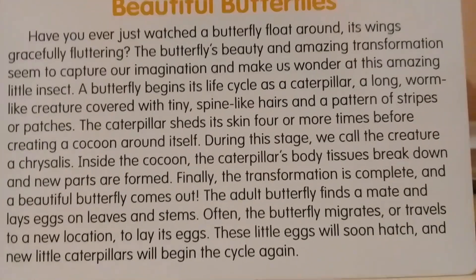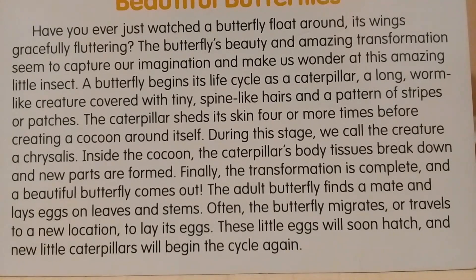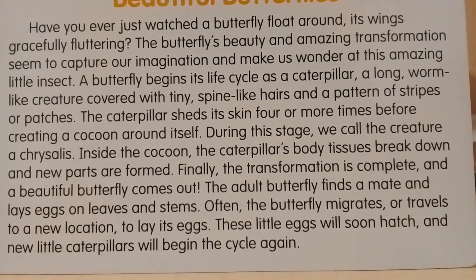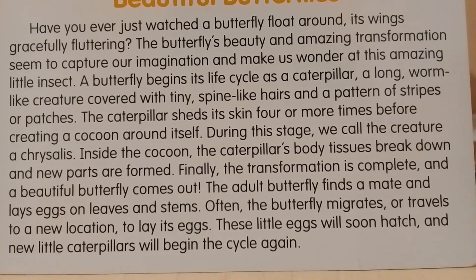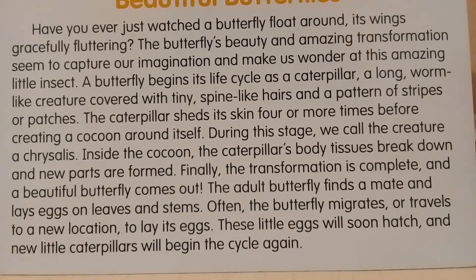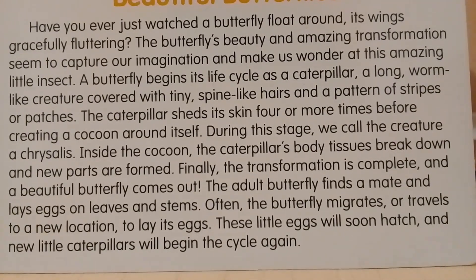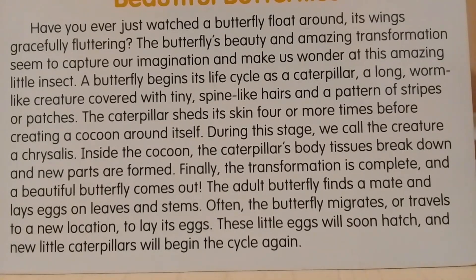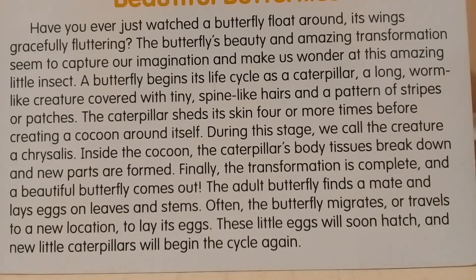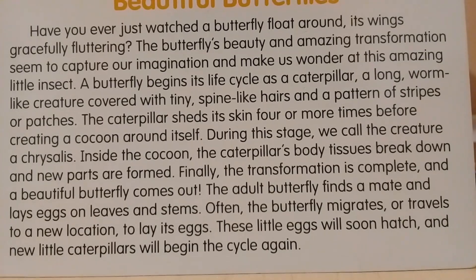'The caterpillar sheds its skin four or more times before creating a cocoon around itself. During this stage we call the creature a chrysalis. Inside the cocoon the caterpillar's body tissues break down and new parts are formed. Finally the transformation is complete and a beautiful butterfly comes out. The adult butterfly finds a mate and lays eggs on leaves and stems. Often the butterfly migrates or travels to a new location to lay its eggs. These little eggs will soon hatch and new little caterpillars will begin the cycle again.'